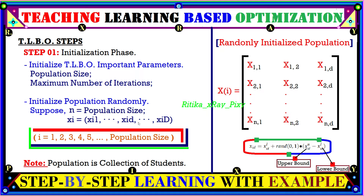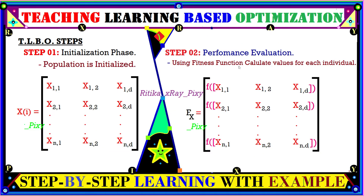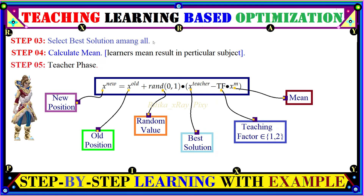We have the population size and maximum number of iterations. Then we initialize the population randomly for individuals. Suppose we have 10 individuals, so i runs from 1 to 10. The collection of students or learners forms the current population, and the best among all is considered as the teacher. In step two, we evaluate the performance for the current population using a fitness function, calculate the fitness value for each individual, select the best solution as the teacher, and then calculate the mean result before entering the teacher phase.